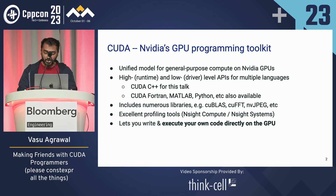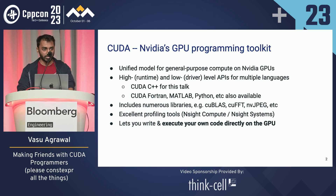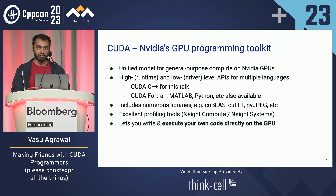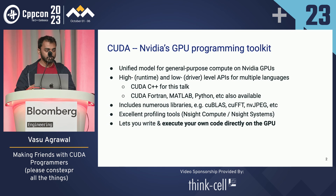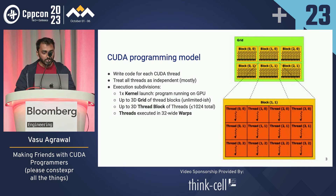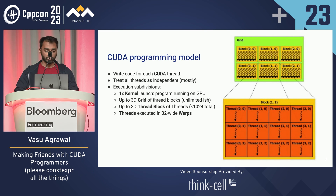We don't care about any of that though — we want to write our own code running on the GPU, directly executing on all the threads. The programming model for CUDA is you assume that each thread is independent and you write code as if it was running on each individual thread.